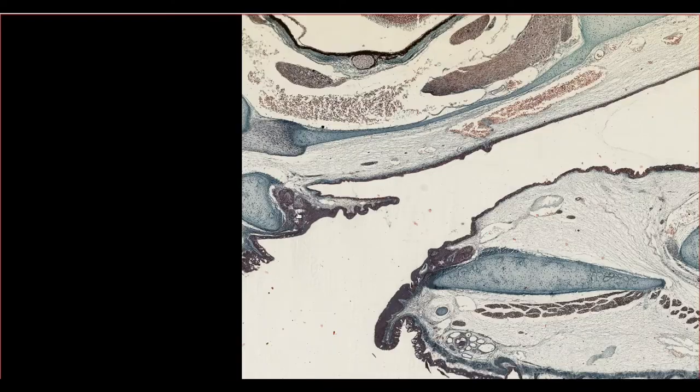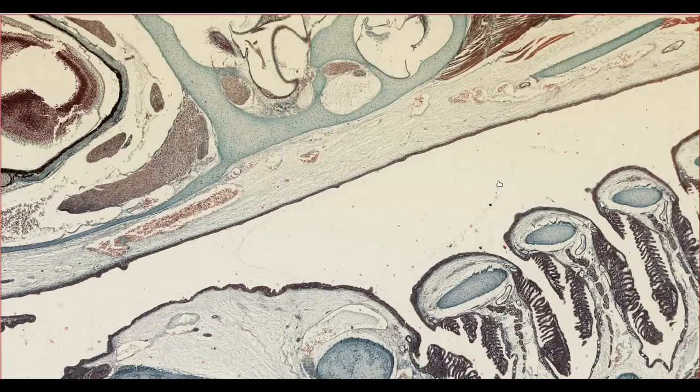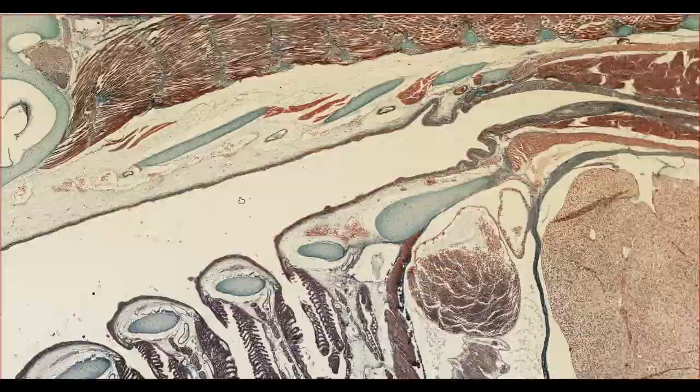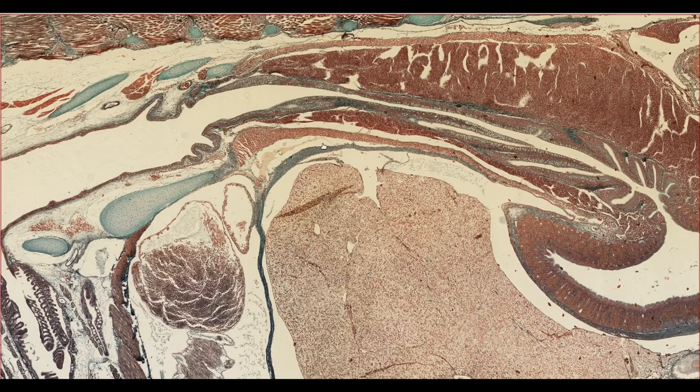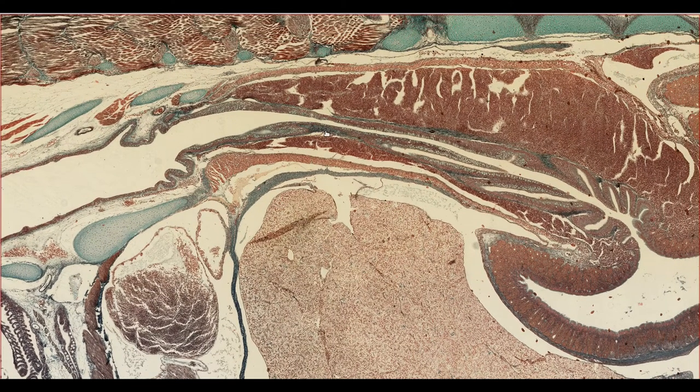From the mouth, food passes to the esophagus, which we can see here. From here, the digestive system is essentially one long tube with a similar structural pattern all the way to the anus.